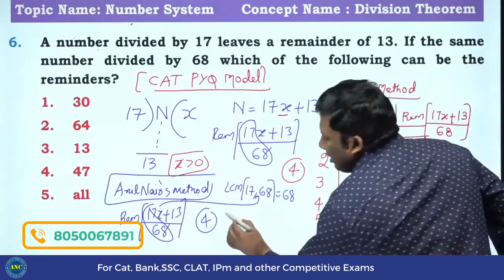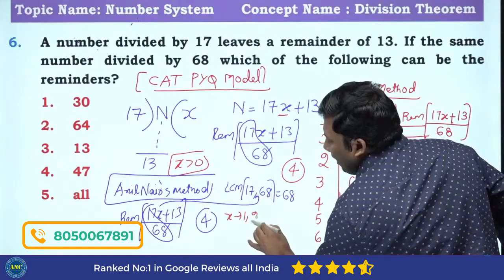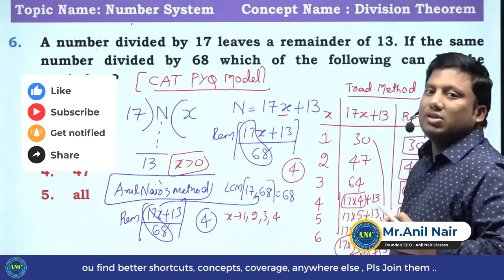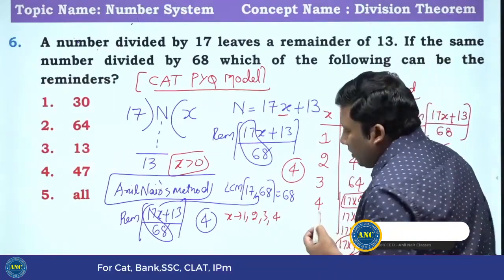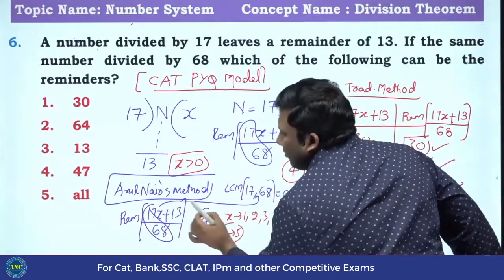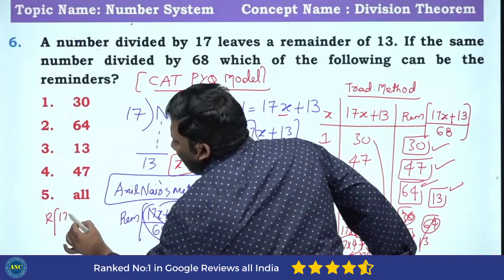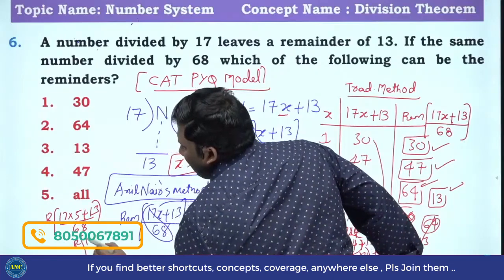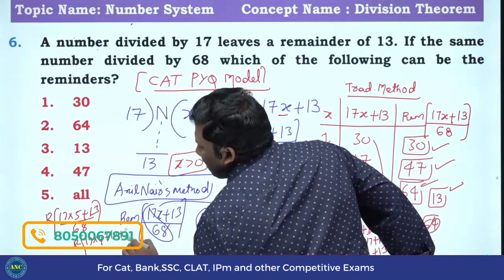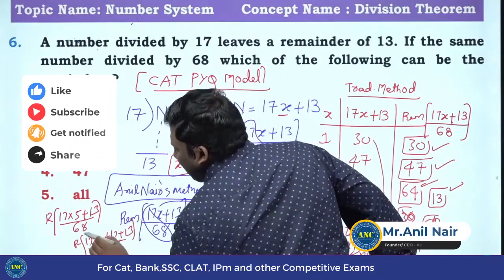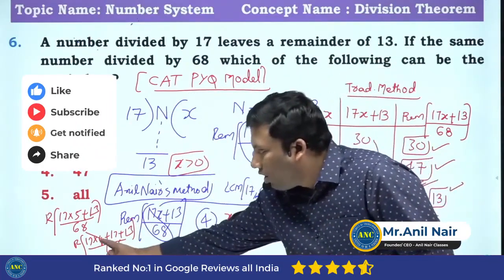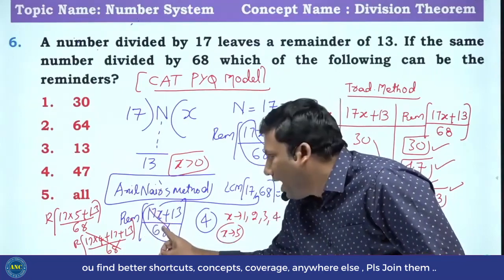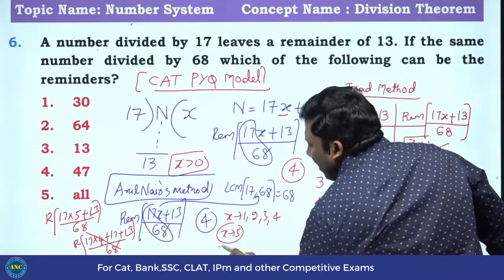Here is the logic: for X=1 I get one remainder, X=2 another, X=3 another, X=4 another. If I take X=5: 17×5 plus 13 divided by 68 can be written as 17×4 plus 17 plus 13 divided by 68. The 17×4 equals 68 and is perfectly divisible — I am making the numerator a multiple of 68. For X=6 the same logic applies.